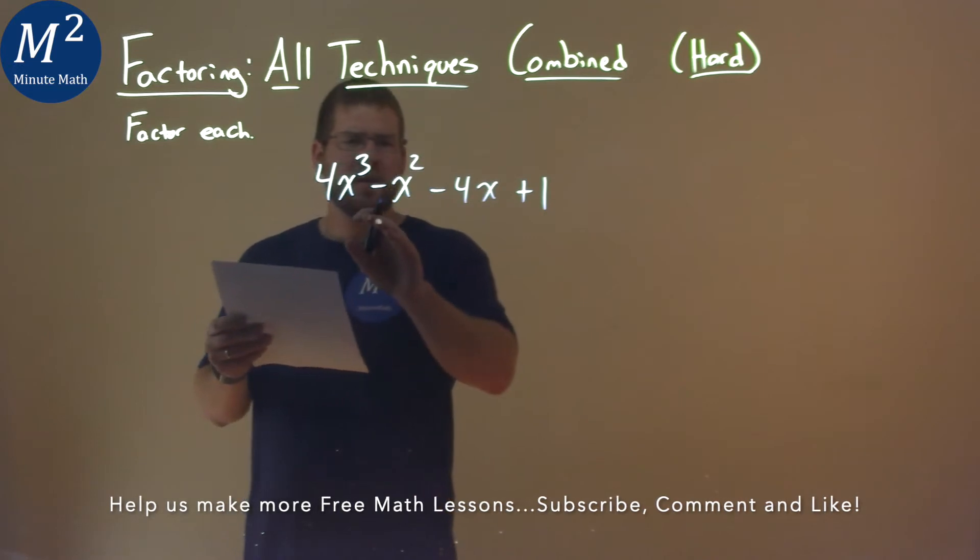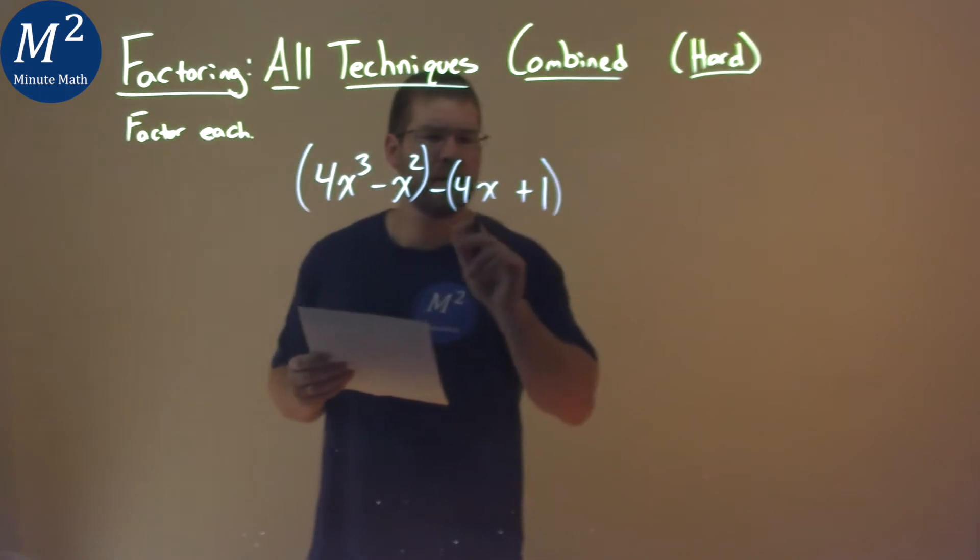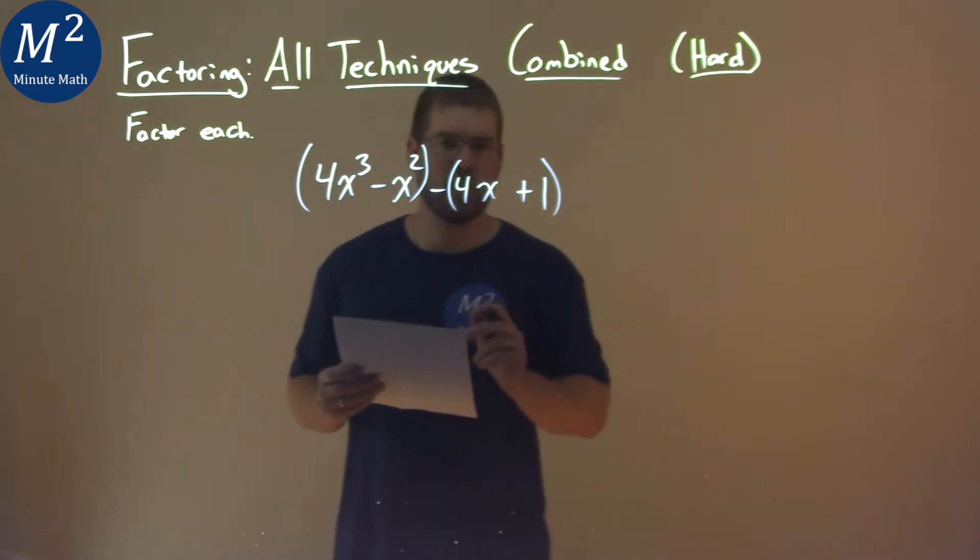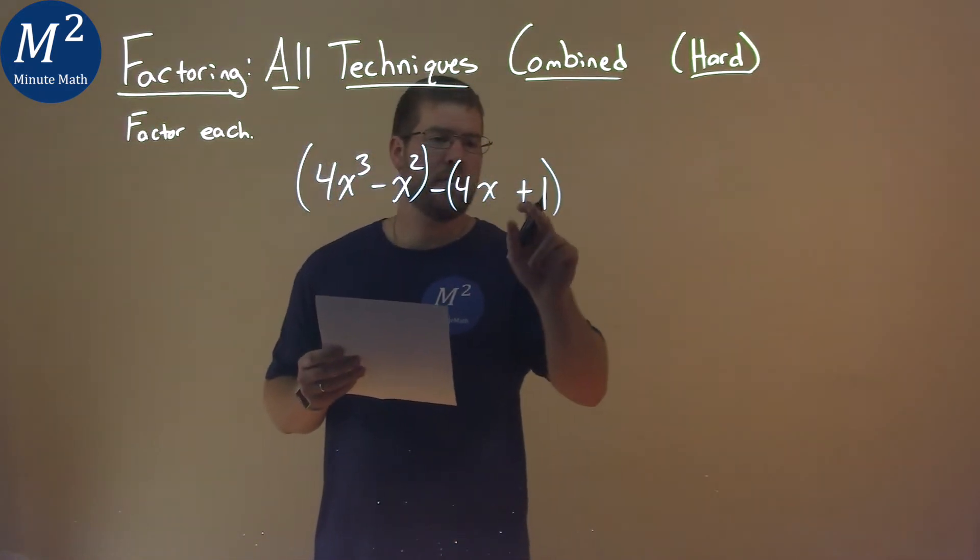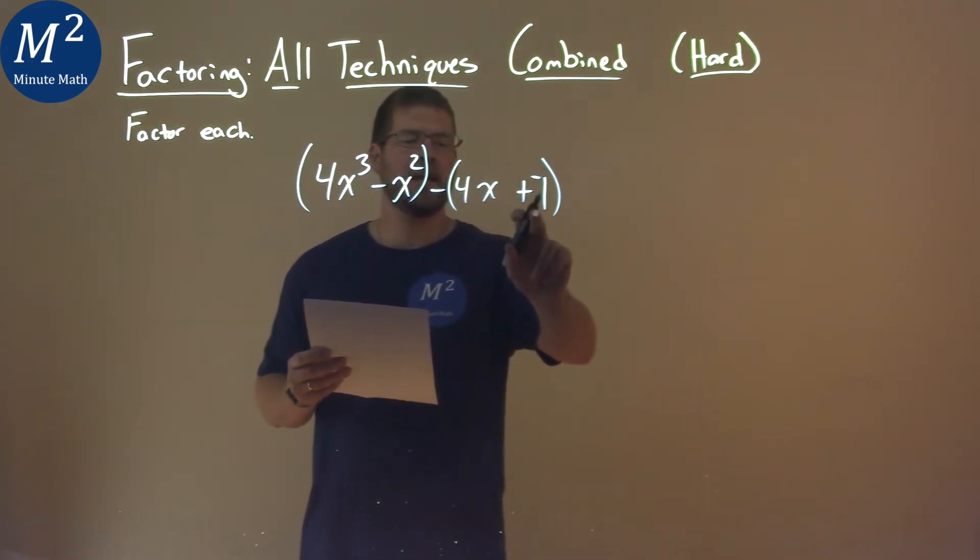Well, one thing I noticed is that I can probably put this in some groups, so I'm going to group that here, and I'm going to group this here. Now, be careful that minus sign was just to the 4x, so to cancel that, we have to put it to the 1, like that, and we distribute, negative, negative, give us back our positive.